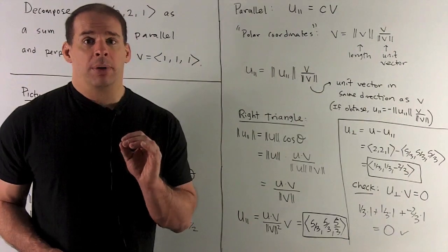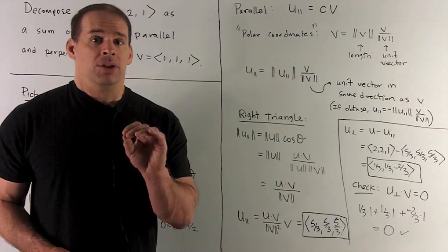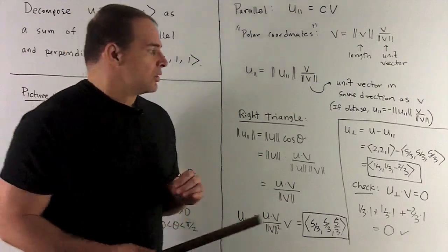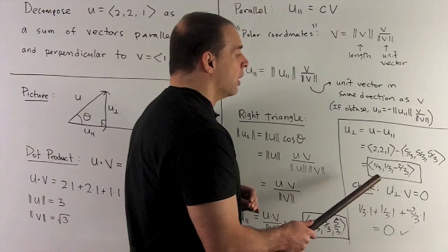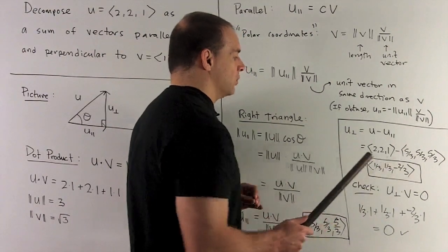Now to find u perp, we just take u, subtract off u parallel. So that gives me (2, 2, 1) minus (5 thirds, 5 thirds, 5 thirds). Take the difference: 1 third, 1 third, minus 2 thirds.